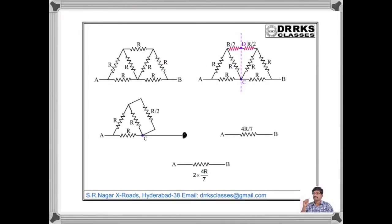Let us find out the effective resistance between A and B. Here, this R and this R can be split up into R by 2 and R by 2, so that there is a symmetry line between C and D. The potential at D equals the potential at C, so even if we connect points D and C, there is no change in effective resistance between A and B. We connect D and C by a wire. Then those R by 2 values are in parallel, connected in series with the remaining R. The effective resistance between A and C is 4R by 7, and similarly between C and B is also 4R by 7. So the effective resistance between A and B is 8R by 7.